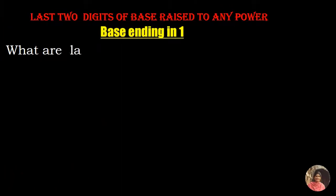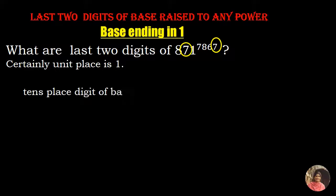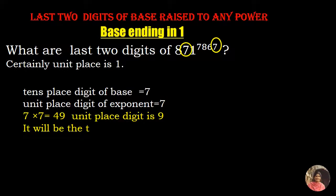Another example. What are the last two digits of 871 raised to the power 7867? The unit's digit is 1. We look at only the tens place digit of the base, which is 7, and the unit's digit of the exponent, which is also 7. Multiply: 7 times 7 is 49. The unit's digit is 9. So last two digits will be 91.